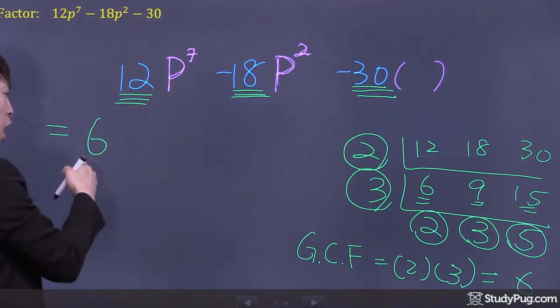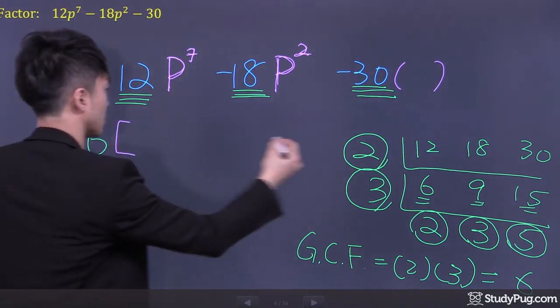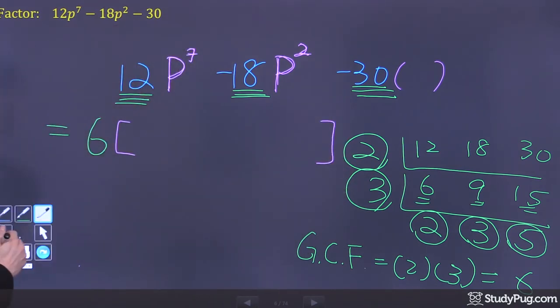So that's it. The only thing we can take out is the common factor 6. Then what do we have left? Let's see.